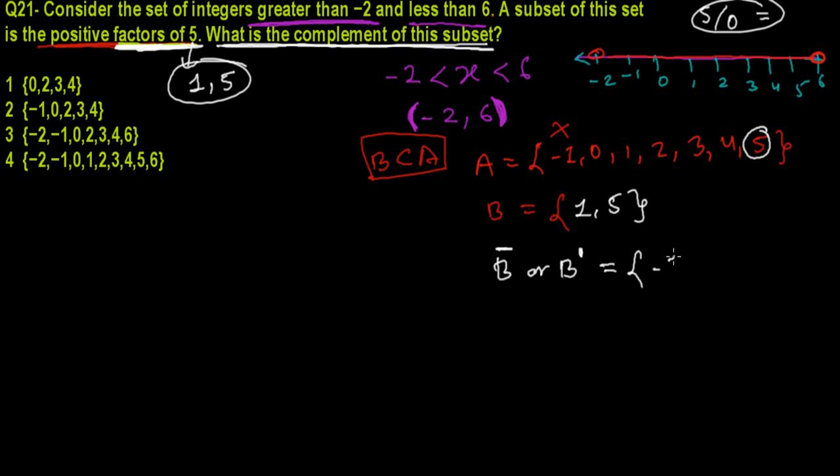So not 1. Before that we have here -1, 0, and then 2 because I cannot take this 1, and then 3 and then 4, and then finished because 5 is here. So this is B complement, this is the complement of the subset that we get from A. So -1, 0, 2, 3, 4.